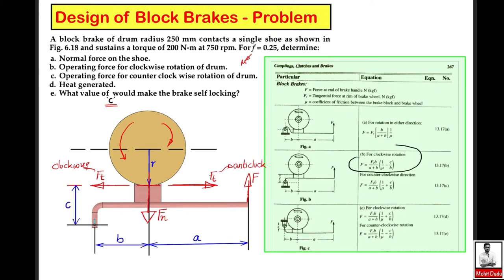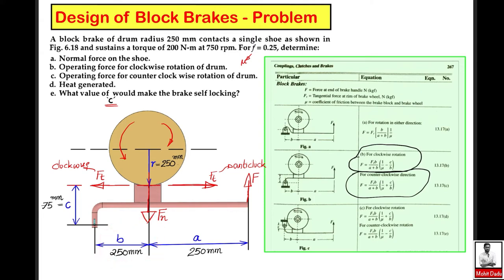For both clockwise and anti-clockwise rotation, the required equations are provided — one for clockwise and one for anti-clockwise rotation. We will directly substitute all values to evaluate the operating force f. The given dimensions are: distance b = 250 mm, distance a = 250 mm, distance c = 75 mm, and the radius of the brake drum r = 250 mm.